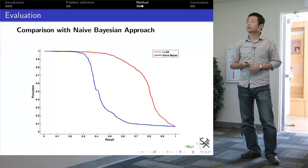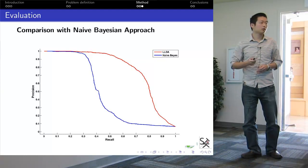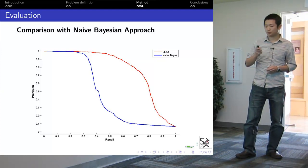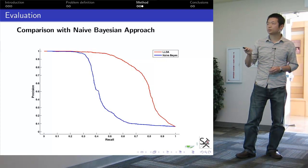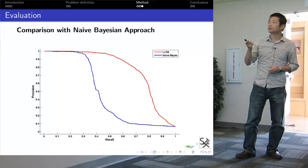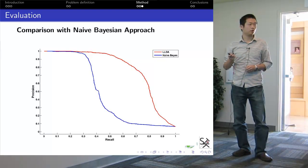By doing an evaluation, we compare our method with the naive Bayesian approach. Here, this is a precision and recall curve. Generally, our results show better performance.